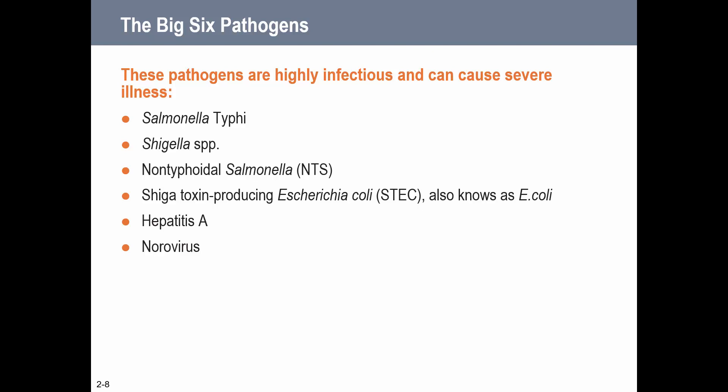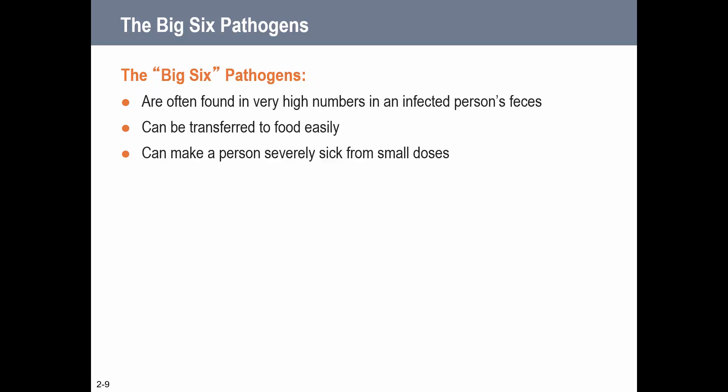ServSafe identifies the Big Six as pathogens that are highly infectious and can cause severe illness. The six currently identified are: Salmonella Typhi, Shigella, non-typhoidal Salmonella, Shiga toxin-producing E. coli, Hepatitis A, and Norovirus. These are often found in high numbers in an infected person's feces, are easily transferred to food, and can make someone very sick from just small doses.